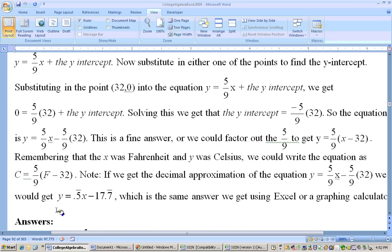Now, if you wanted the decimal approximation, well, five ninths is the same as 0.5 bar, so you could take that 0.5 bar, which is, you know, 0.5 repeating,